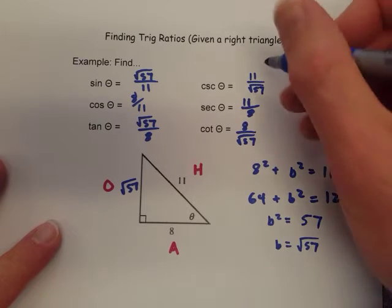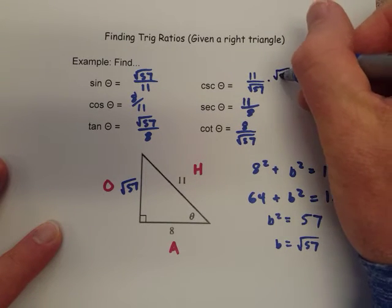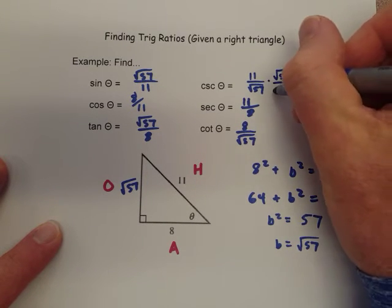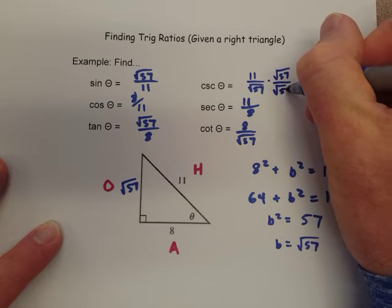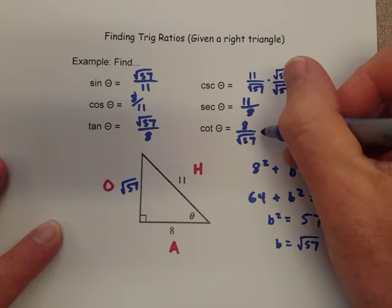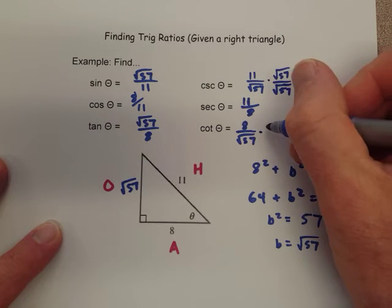So after we get that flipped, we do, in order to be completely correct, have to multiply both top and bottom by that square root number. So if we do that, and that's gonna apply to both the cosecant and the cotangent.